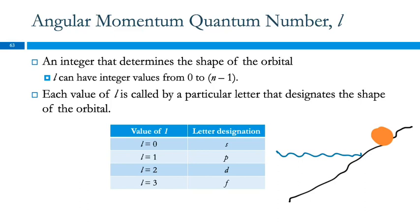The second quantum number tells us the shape of the orbital. This number can have values from zero up to one less than n. We typically refer to these with letters.